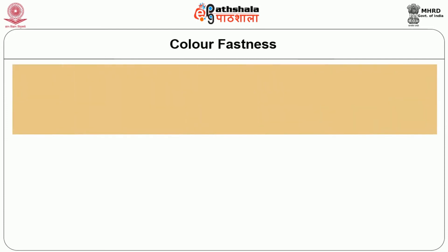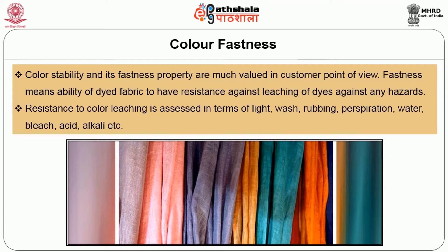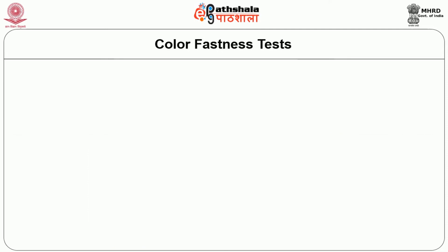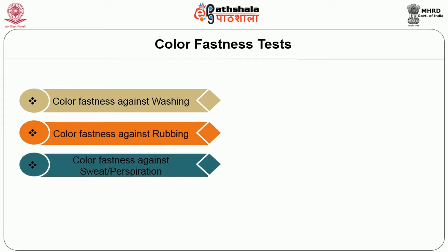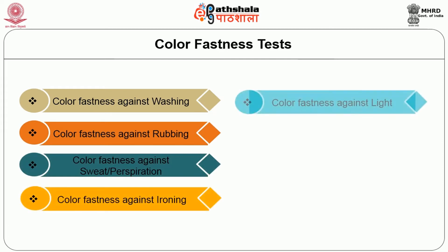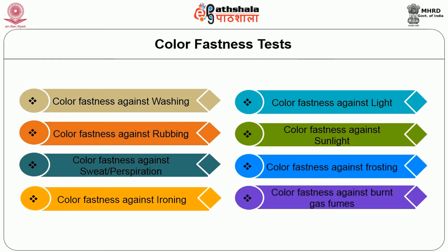Colorfastness: the ability of the woven fabric, mainly the coloured woven fabrics, to resist against different environmental factors. Stability of colour and fastness properties are highly valued from the customer's point of view. Fastness means the ability of dyed fabric to resist leaching of dyes against any hazards. Colour leaching is assessed in terms of light, wash, rubbing, perspiration, water, bleaching, acidic, alkali, etc. Various colorfastness tests commonly used in industry include: colorfastness against washing, against rubbing, against sweat or perspiration, against ironing, against light, against sunlight, against frosting, and against burnt gas fumes.